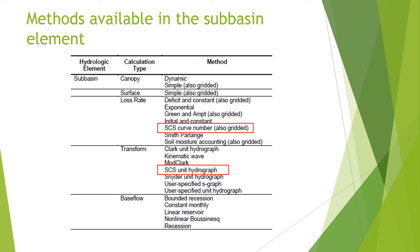Basically, the method we use depends on the data we have. For example, for the transform method, some studies suggest using the Snyder unit hydrograph and some suggest the SCS unit hydrograph. In the US, SCS is popular; however, in Malaysia we sometimes use the Clark unit hydrograph or Snyder unit hydrograph. It really depends on what parameters you have. In this exercise you will use the SCS curve number and SCS unit hydrograph to get your results, and both of these parameters will be provided to you.